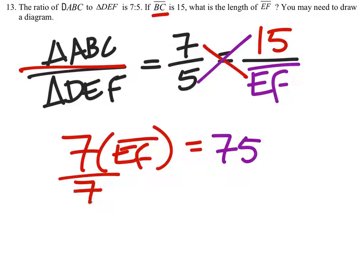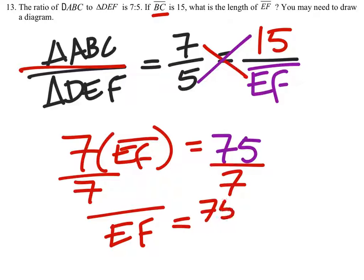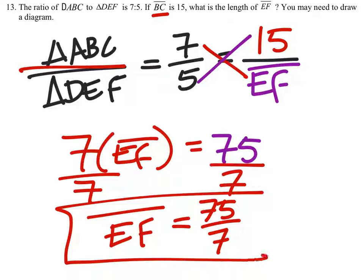And this equals 5 times 15, which is 75. When I divide both sides by 7, I get just EF, which is 75 sevenths.